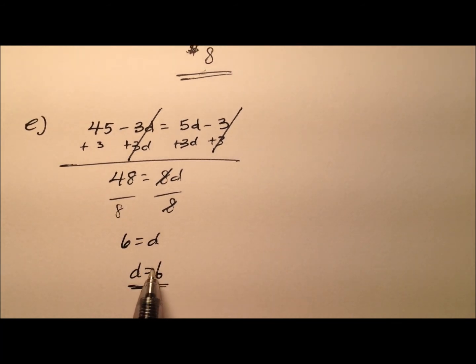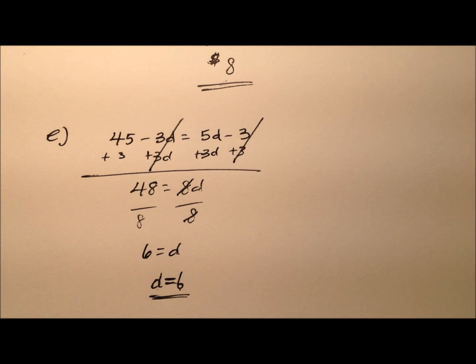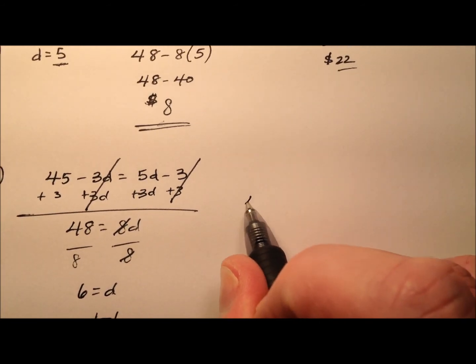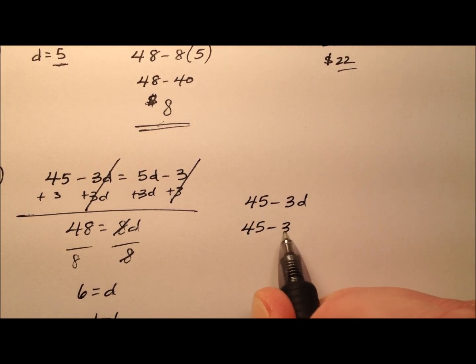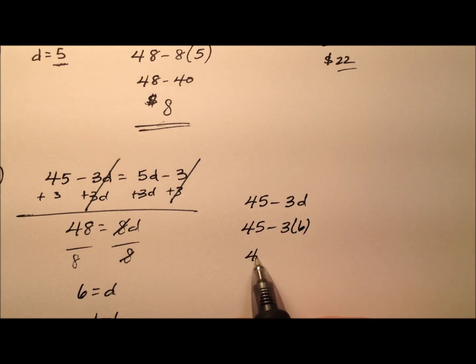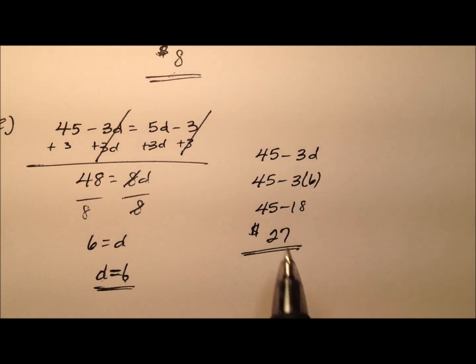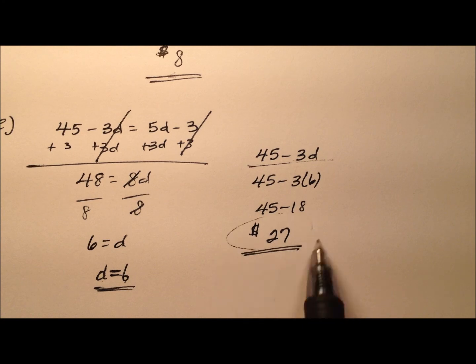Remember this is not a dollar sign, this is just a variable, so d is 6. We need to plug that 6 into these expressions. We only need to plug it into one because the dollar amount will be the same. Let's say 45 minus 3d, so 45 minus 18, which is 27 dollars. It doesn't matter which expression you plug it into because they're the same.